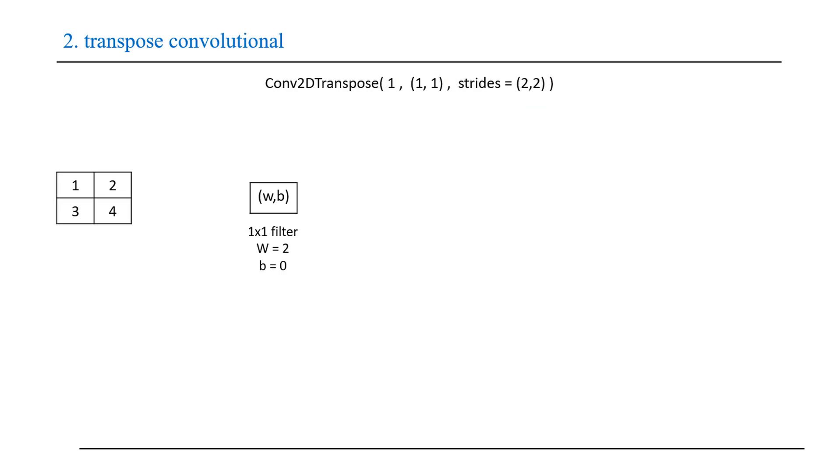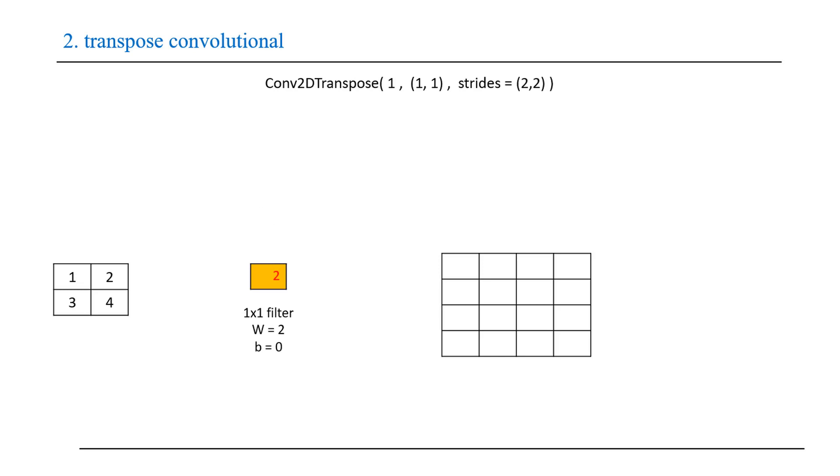So we have this 2x2 input and one filter with 1x1 size. I will set w=2 and b=0. Let's apply transpose convolution: multiply filter by the first element, 2 times 1 equals 2.